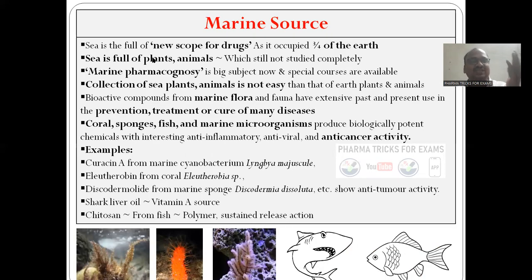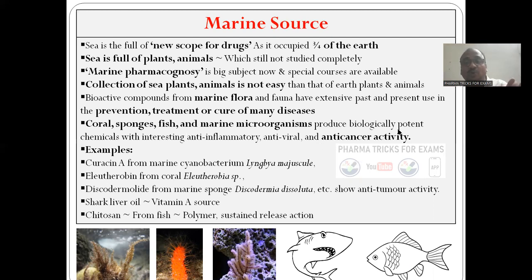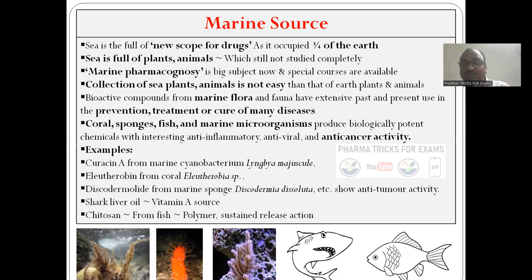Marine sources — the sea is full of new scope for drugs. Three-fourths of the earth is sea only. Sea is full of plants, full of animals. Marine pharmacognosy is a new terminology — it is the collection of sea plants and animals. It is not easy because you have to go on a boat, take a swimsuit, jump into the water, go to the bottom, and collect the plant. Coral sponges, fish, and marine microorganisms produce biologically potent chemicals. Here I have given curacin A, eleutherobin, and discodermolide. Shark liver oil contains vitamin A, compulsory for your eyes. Cytarabine is also an excellent product.